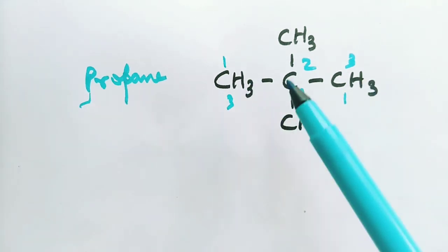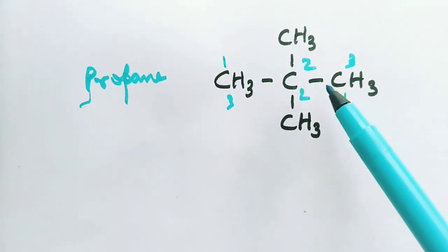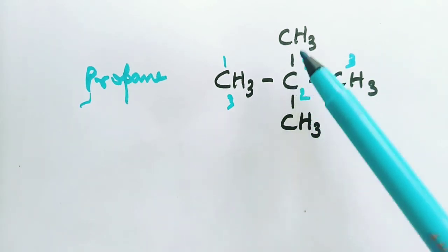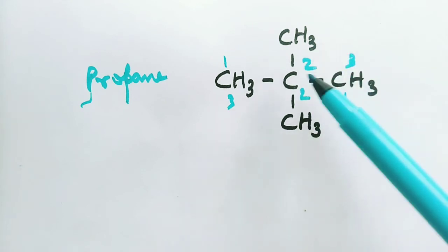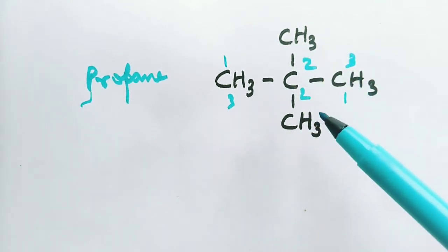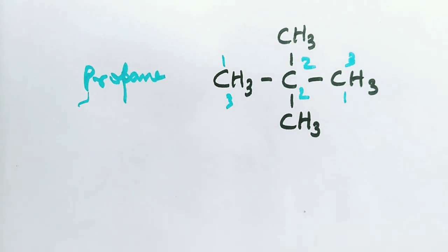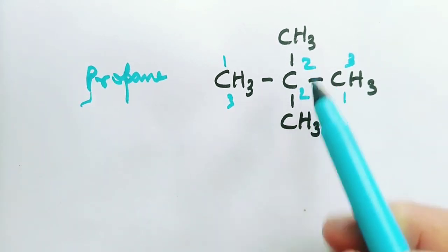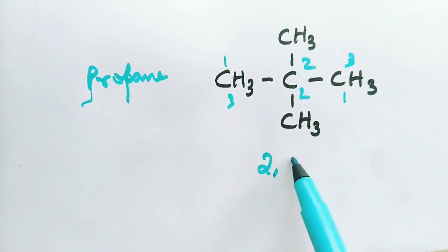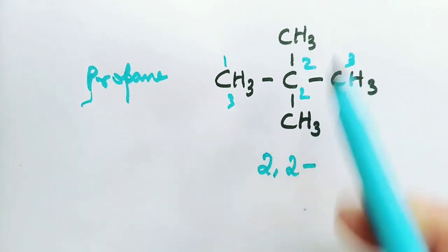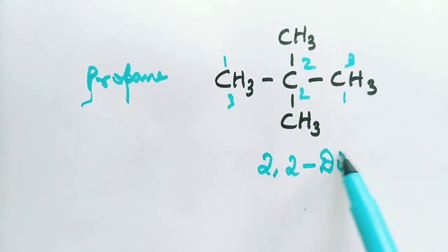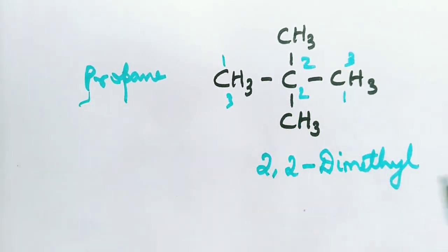or from right to left, because even if we do both ways, then this carbon to which the two substituents are attached is at second position only. Then how to name this given alkane? Write the positions: two, two. How many methyl groups? Two. 2,2-dimethylpropane.